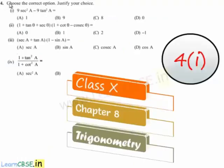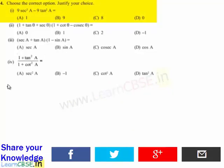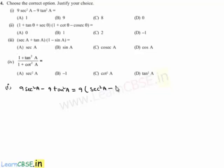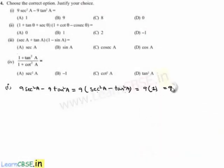Moving on to the fourth question — choose the correct option and justify your choice. For the first bit: 9sec²a - 9tan²a. Taking 9 common, we get 9(sec²a - tan²a). Using the identity sec²a - tan²a = 1, this equals 9. So option B is correct.